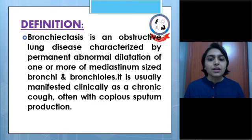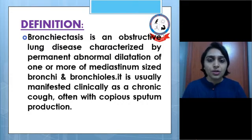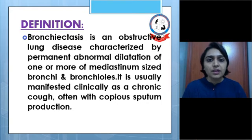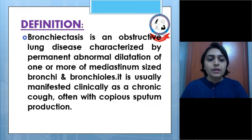Let's see the definition first. Bronchiectasis is an obstructive lung disease characterized by permanent abnormal dilatation of one or more of the medium-sized bronchi and bronchioles. It is usually manifested clinically as a chronic cough, often with copious sputum production.